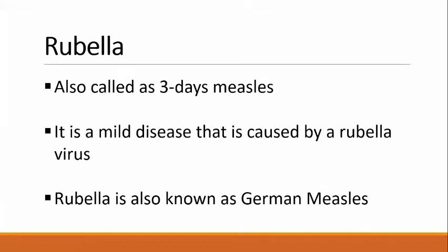Rubella is also called three-day measles. This name derives from the typical course of rubella exanthema, which starts initially in the face and neck, spreads centrifugally to the trunk and extremities within 24 hours, then begins to fade on the face on the second day and disappears throughout the body by the end of the third day. It is a mild disease caused by rubella virus, also known as German measles because it was first described by German physician Friedrich Hoffmann in the mid-18th century.